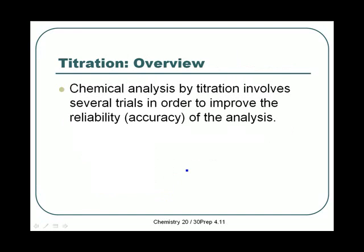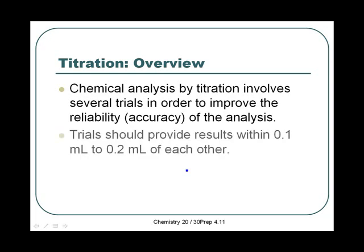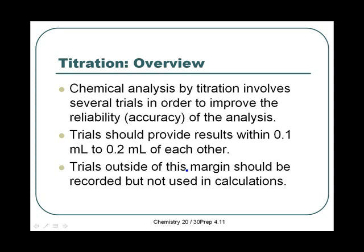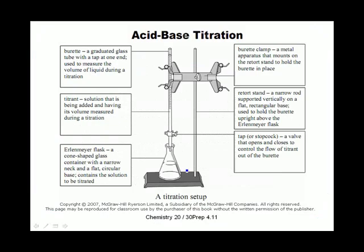The purpose of a titration is to find an accurate concentration. Because it's fast to perform, the experimental procedure can be done several times to improve reliability. Each trial should provide a result within 0.1 to 0.2 milliliters of each other, so they should be very close. If any trial falls outside this margin it won't be used in our chemical calculations — you'd still record it, but you wouldn't use it in your stoichiometry.